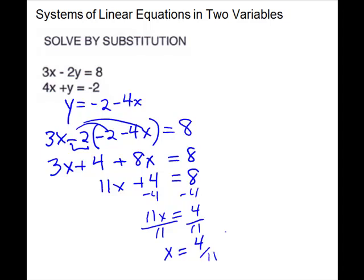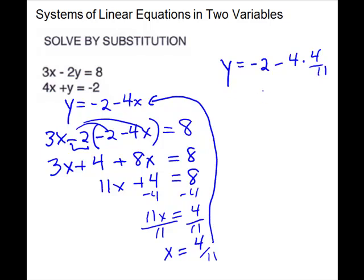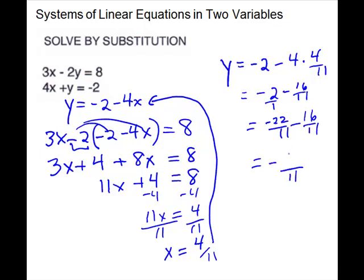We need to plug that back in. So y equals negative 2 minus 4 times 4 elevenths, which gives me negative 2 minus 16 elevenths. We need a common denominator — 11 will work. Multiplying top and bottom by 11, we get negative 22 over 11 minus 16 over 11. Keeping that denominator and combining the numerators gives us negative 38 over 11. So our solution is 4 elevenths and negative 38 over 11.